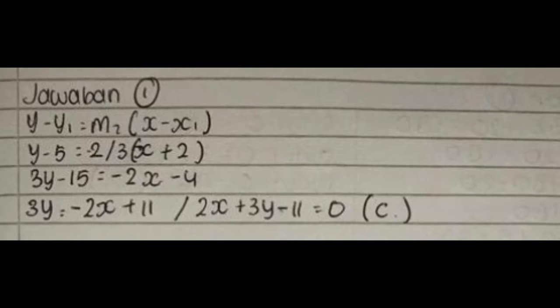Solution: y - y1 = m(x - x1). y - 5 = -2/3(x + 2). 3y - 15 = -2x - 4. 3y = -2x + 11. Therefore, 2x + 3y - 11 = 0. The answer is C.